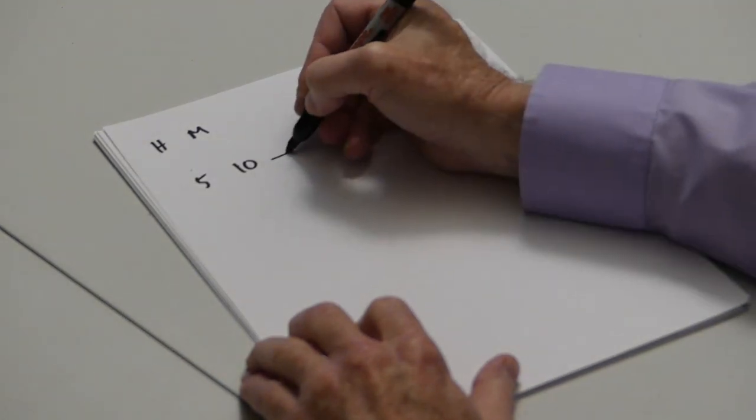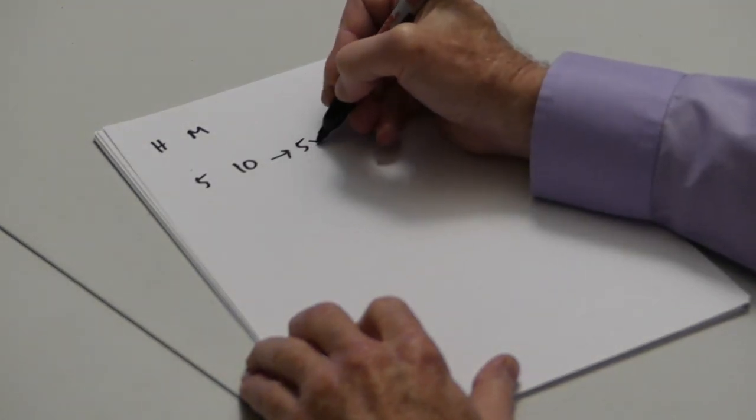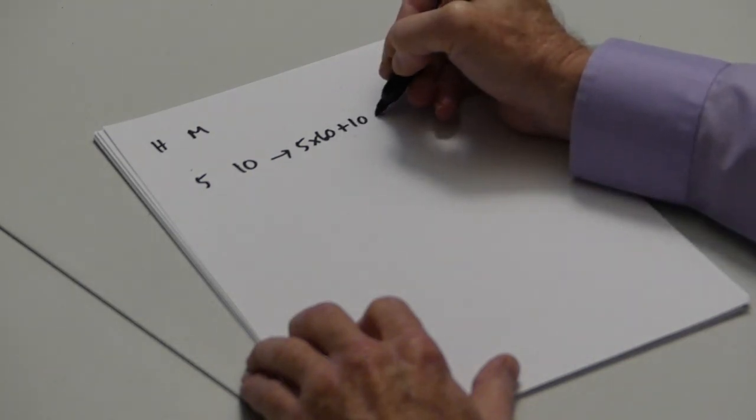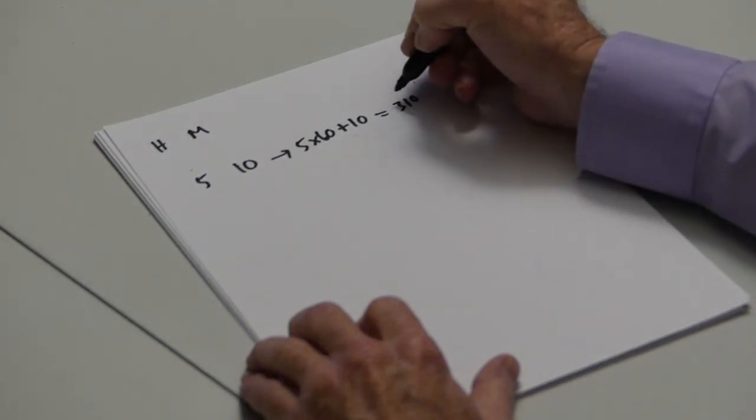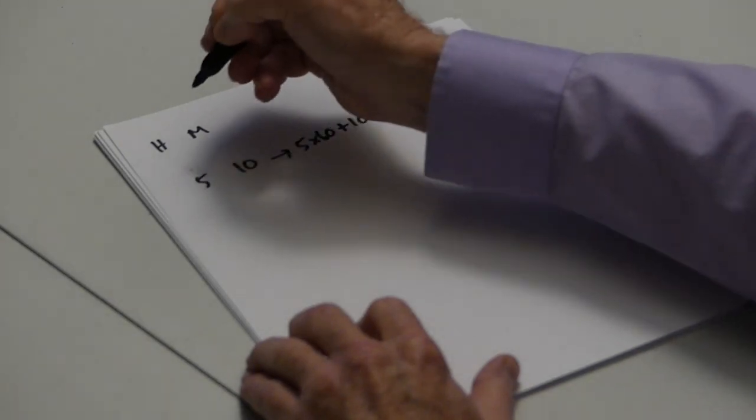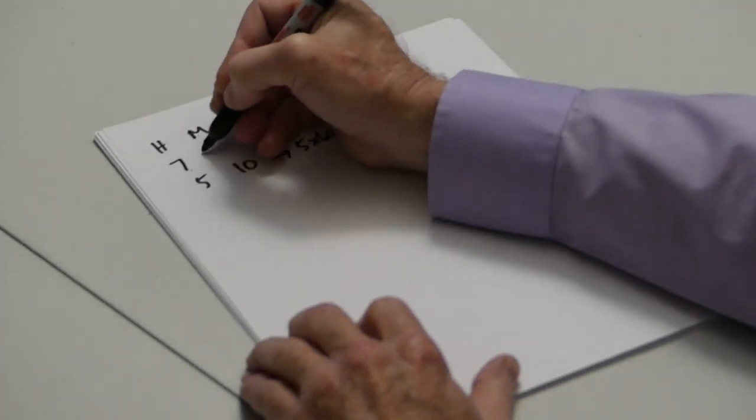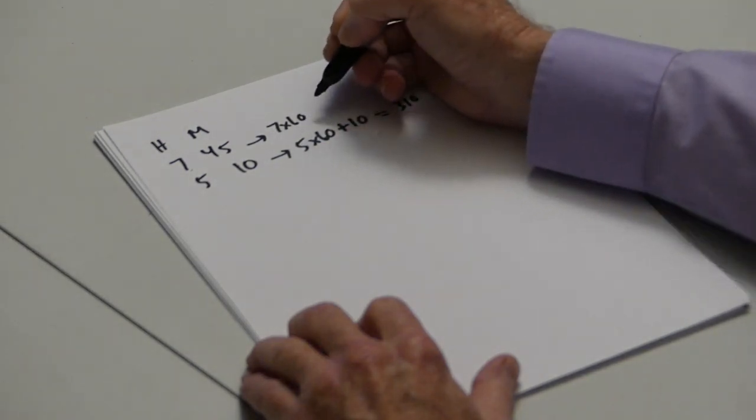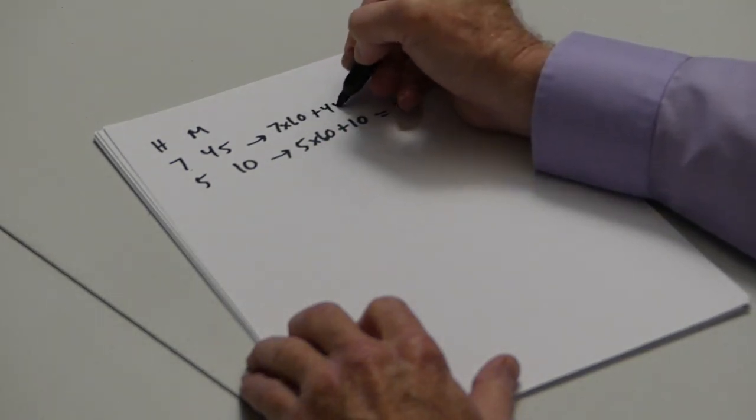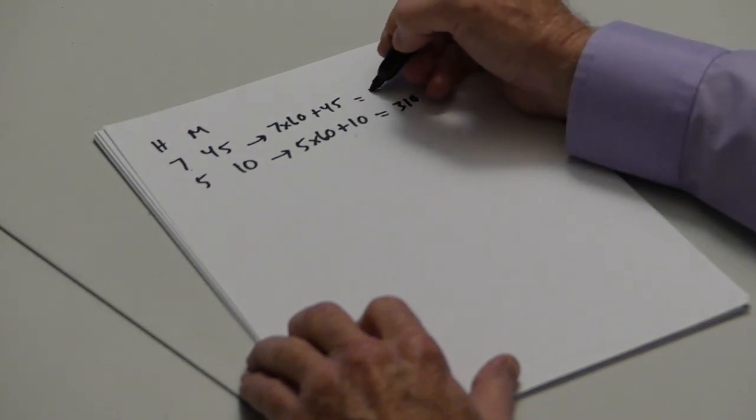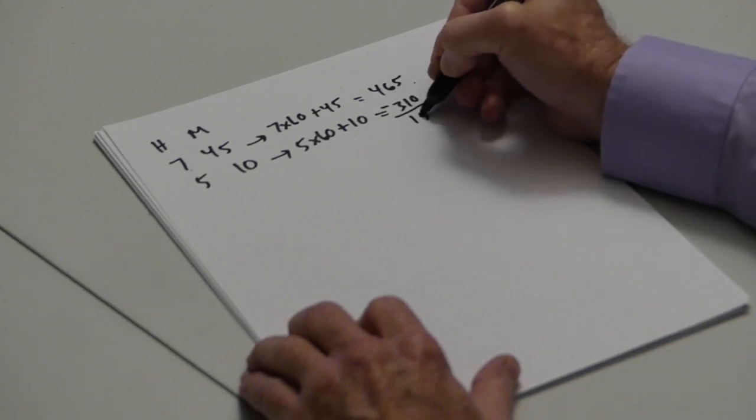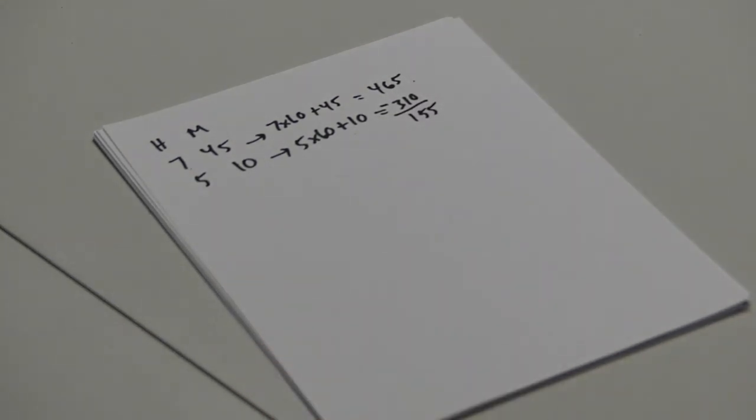5.10 in the morning is 5 hours, which is 300 minutes, plus 10, which is 310 minutes past midnight. Our ending time of 7.45 is 7 times 60, which is 420, plus 45, which is equal to 465. Subtract those numbers, and there's our 155 minutes.